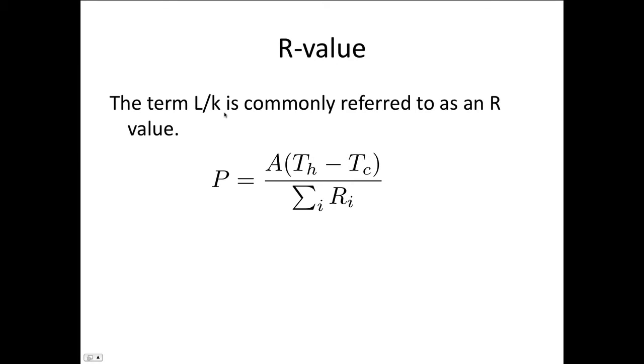And it's referred to as an R-value. So the formula for the rate of heat flow with R-values is P equals the surface area, the hot side, the difference in temperatures between the hot side and the cold side, over the sum of the R values for whatever materials you're building it from.